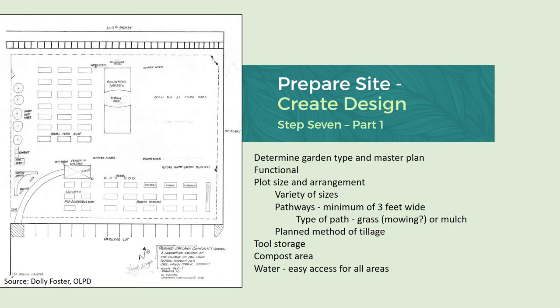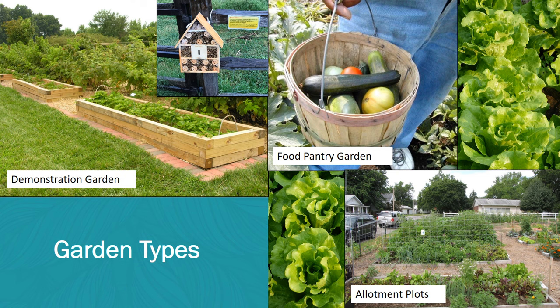Also consider tool storage, a compost area, and easy access to water. There are examples where gardens have demonstration areas with berry bushes, bee houses inviting beneficial pollinators, hoop house framework to extend the growing season, food pantry gardens, and allotment plots where people rent and grow what they'd like.